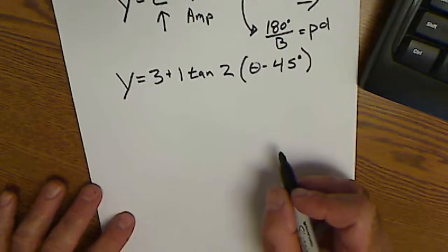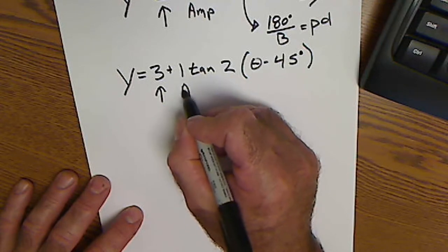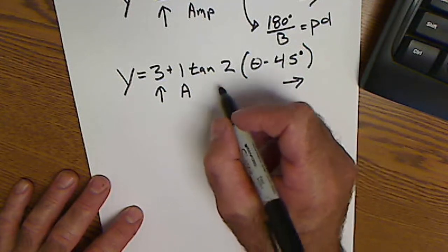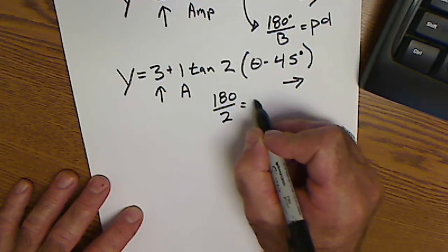What I do first is mark up my equation: vertical shift, amplitude, phase shift. I'm in degrees. 180 divided by 2 is 90.